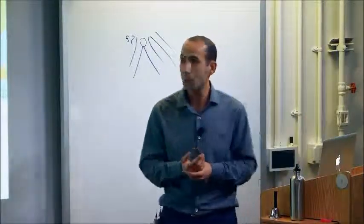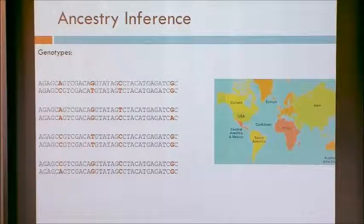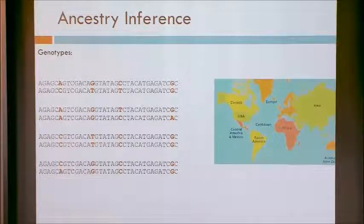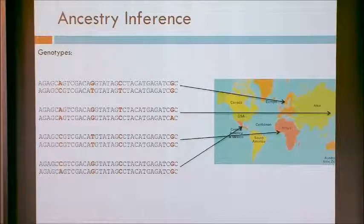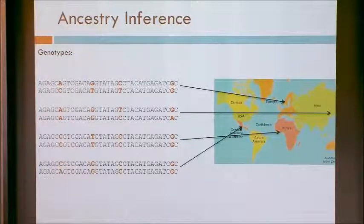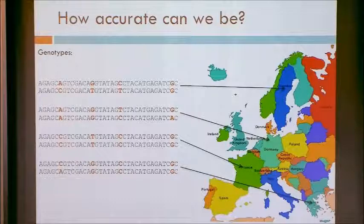I'd like to start by introducing the problem I want to talk about. It's a computational or statistical problem where we try to infer parameters — specifically the ancestry of individuals. The most general problem is: you have a set of genotypes, a set of individuals, and you want to know where each one is from — Asia, Europe, and so on. Can we even narrow it down to which country, which city, or which neighborhood?